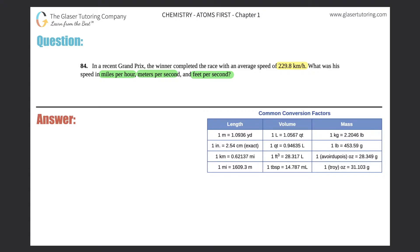So this is actually the first time that we are doing a double conversion, meaning that there are going to be two units that we have to work with. Our given is 229.8 kilometers per hour — just know that H or HR means hour — and we have three different answers here. So I'm just going to put one, two, and three.